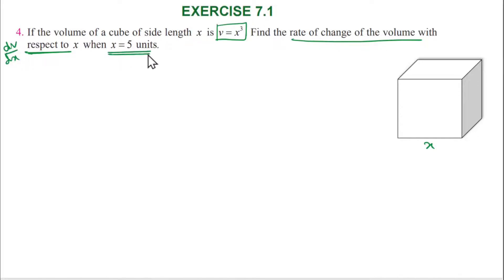DV by DX when x is equal to 5, then the value is 5. Now look at this solution.